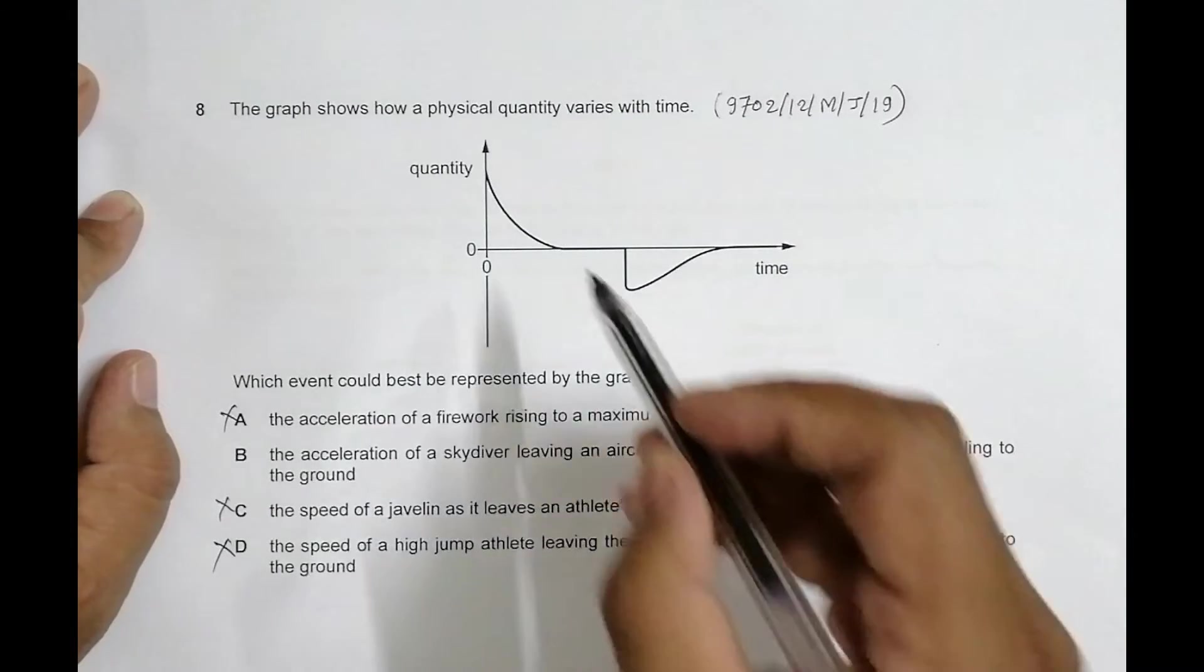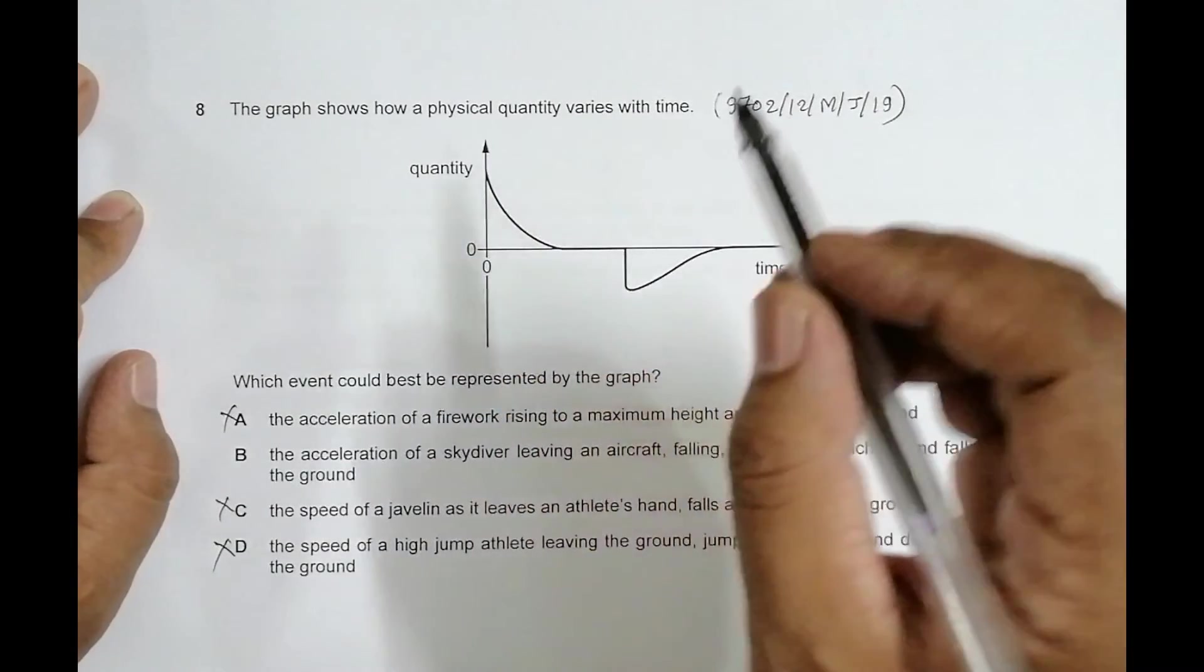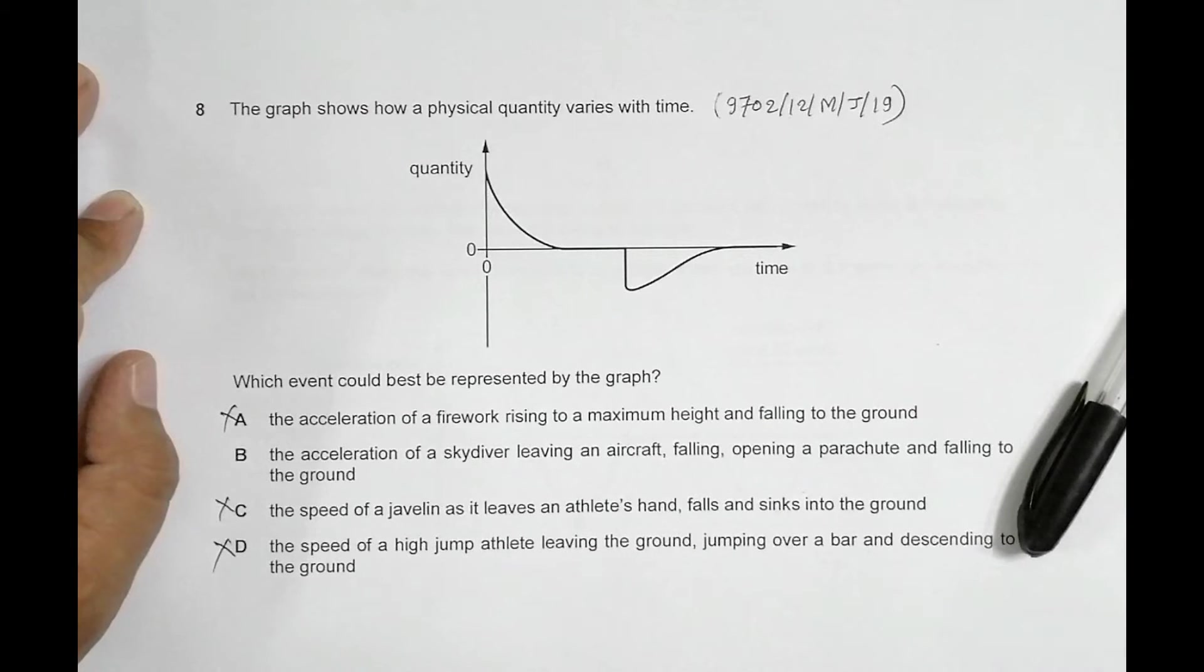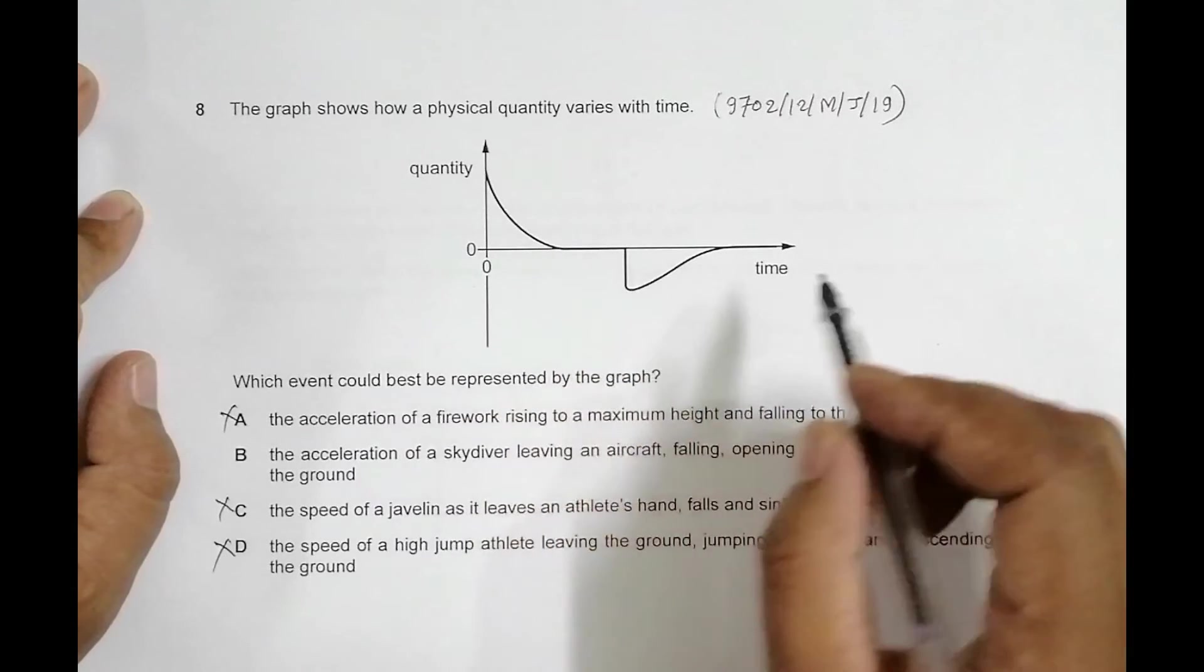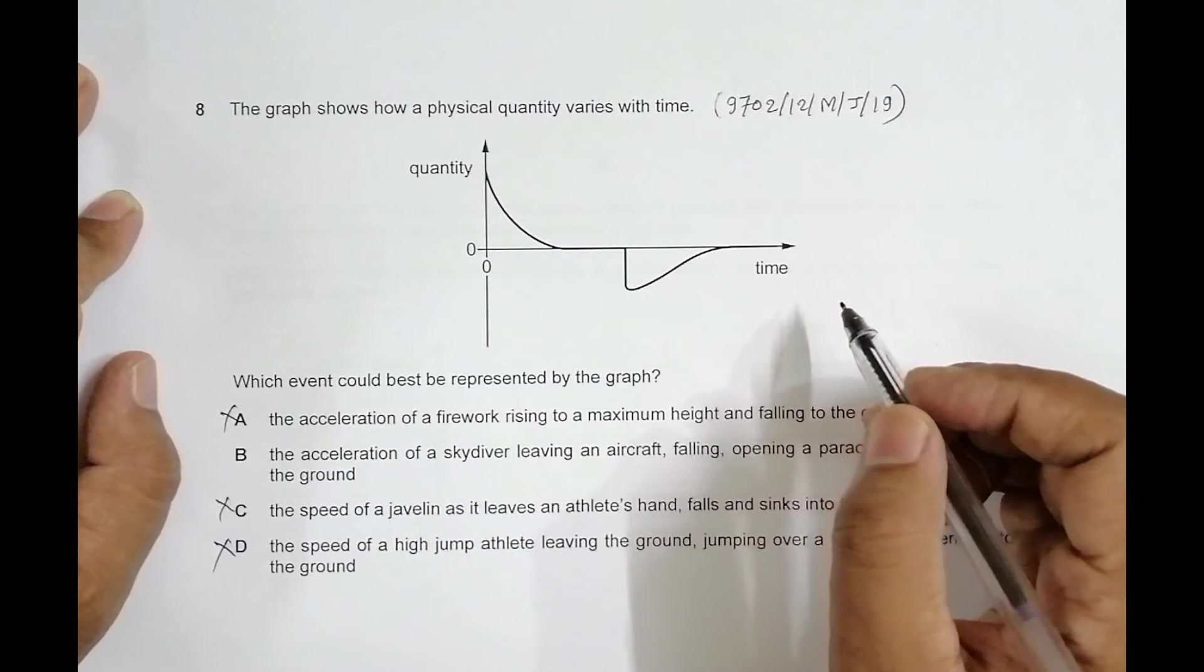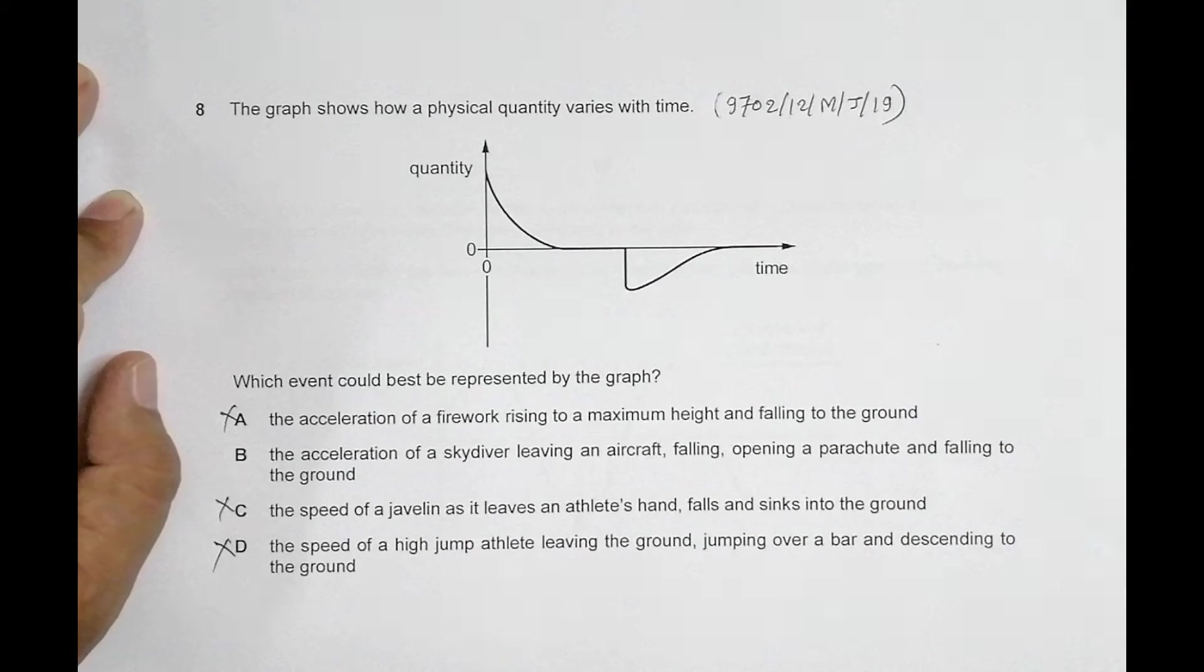which means a will be lesser and lesser. Somewhere it gains terminal velocity, which means a will be zero, and this occurs for a considerable amount of time. After that, the parachute opens. The parachute opens means that the opposing force increases drastically, which means negative force increases drastically,